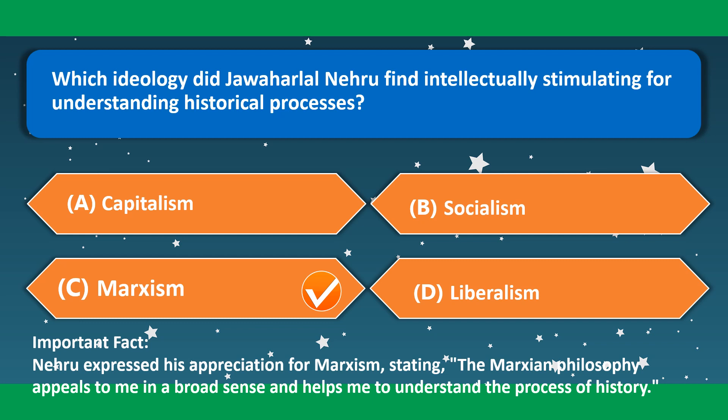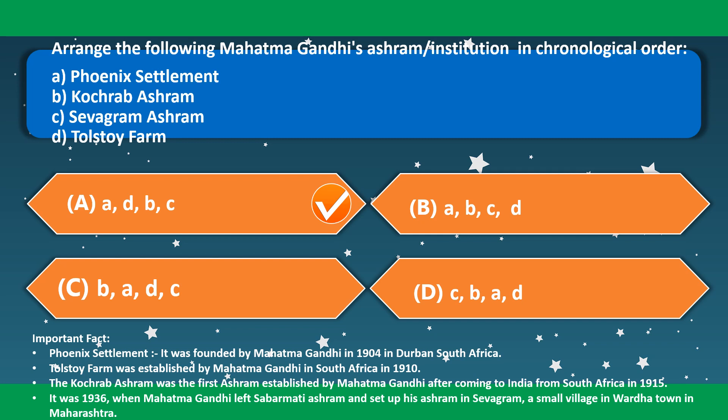Which ideology did Jawaharlal Nehru find intellectually stimulating for understanding historical processes? This is Marxism. Nehru stated: 'The Marxian philosophy appeals to me in a broad sense and helps me to understand the process of history.' Arrange Mahatma Gandhi's ashram institutions in chronological order: Phoenix Settlement, Tolstoy Farm, Kochrab Ashram, Sevagram Ashram — option A is the correct option.